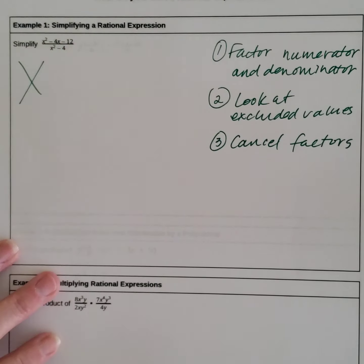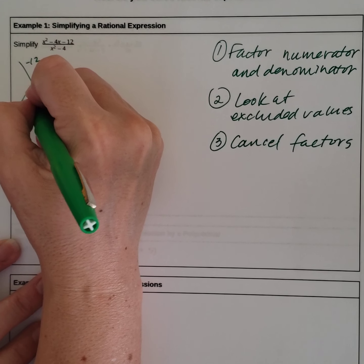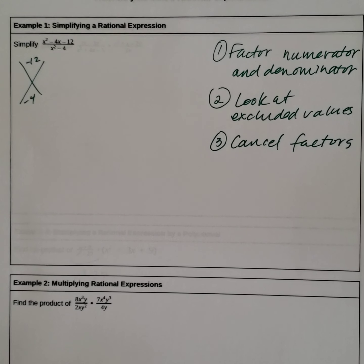Let's look at the numerator. We need our x. We need factors of negative 12 that equal negative 4. Factors of negative 12 are 12 and 1, 2 and 6, 3 and 4.